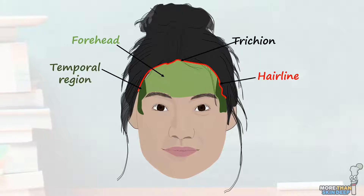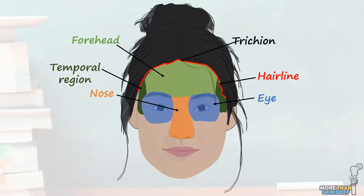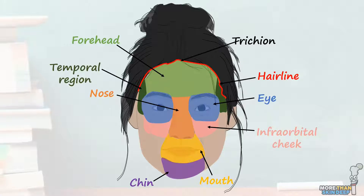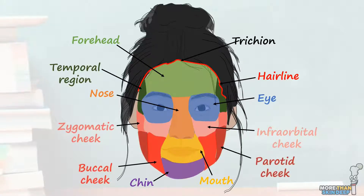Below the forehead, we have the eye, or orbital region, and the nose, or nasal region. Continuing downwards, we have the mouth, or oral region, followed by the chin, or mental region. Lastly, either side of the mouth, we have the two cheeks. The cheeks, depending on your textbook, are sometimes further subdivided into infraorbital, or below eye, zygomatic, buccal, and parotid regions.